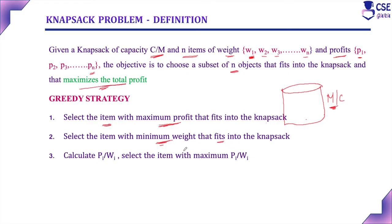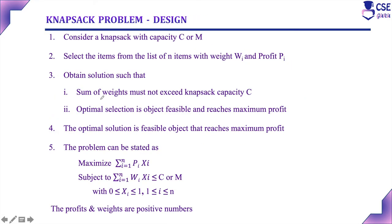To achieve both criteria simultaneously, we calculate the PI by WI ratio. We select the item with the maximum PI/WI ratio, which gives us the item with minimum weight and maximum profit. These are the steps to follow to solve the knapsack problem using the greedy method.